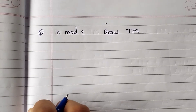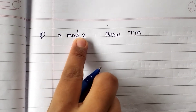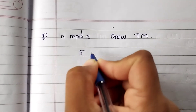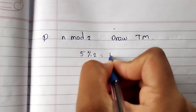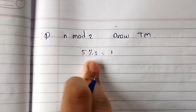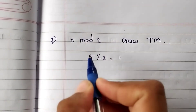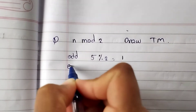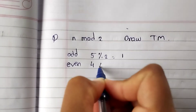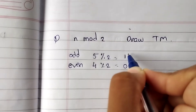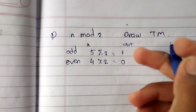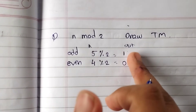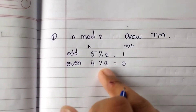Welcome back to the channel. In this video we draw the Turing machine for n mod 2. N mod 2 means: if we take an odd number, say 5, then 5 mod 2 gives remainder 1. So if n is odd, the output is 1. If n is even, say 4, then 4 mod 2 gives remainder 0. So if n is odd the output is 1, and if n is even the output is 0.